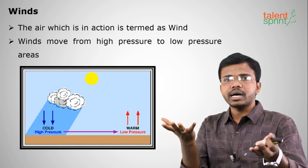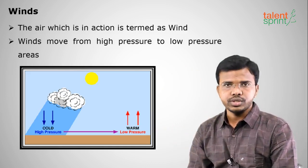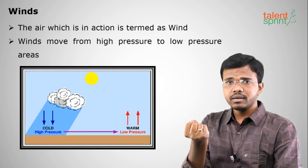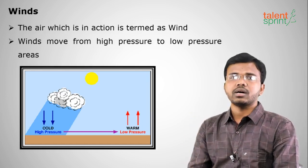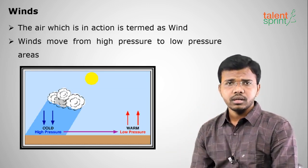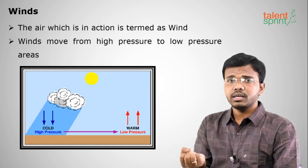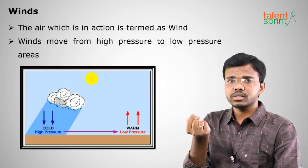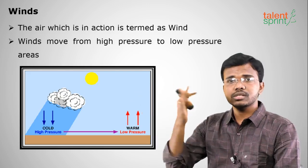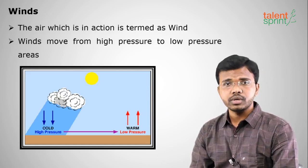Whenever air gets heated up, the particles of air expand — they lose their weight, the distance between particles increases, they become lighter and rise. So higher temperature equals lower pressure. Conversely, in polar regions when air cools, particles get heavier and settle down — that means high pressure. So high temperature is associated with low pressure and low temperature with high pressure. That's why at the equatorial region, air expands and winds blow from poles to the equator — poles are at high pressure and the equator is at low pressure.